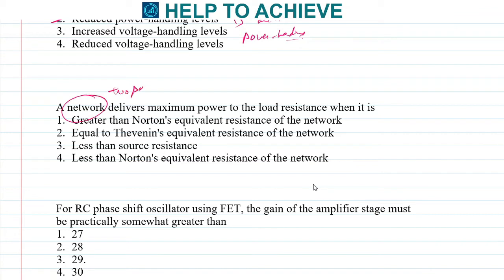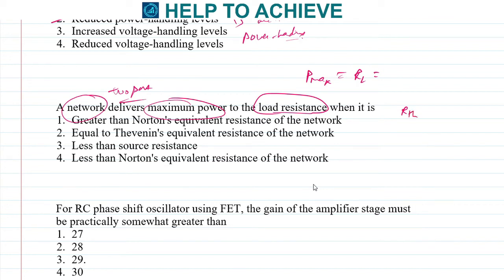Next: for a two-port network, maximum power is delivered to the load resistance when the load resistance R_L equals the Thevenin resistance of the network. This comes from the maximum power transfer theorem. The correct answer is that R_L should be equal to the Thevenin resistance of the network.